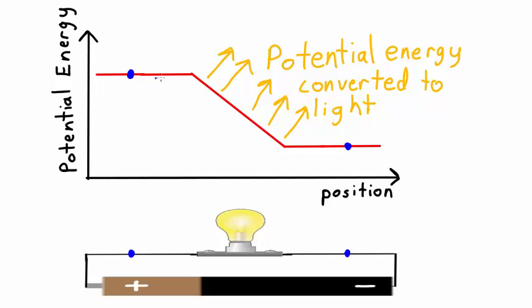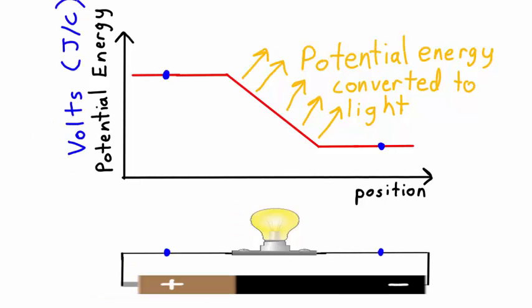We could, it would actually have exactly the same shape, this graph would have the same shape, whether it was potential energy on the y-axis, or volts on the y-axis. It doesn't matter if I could put this as potential energy, or as volts, which is joules per coulomb, and the graph would still have exactly the same shape.